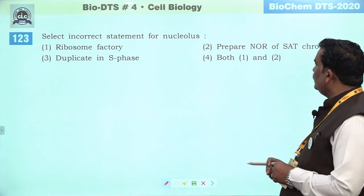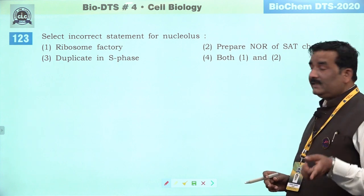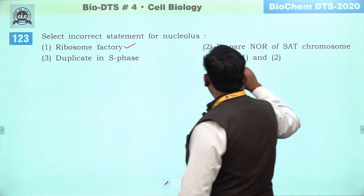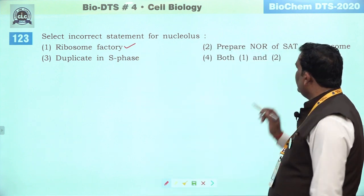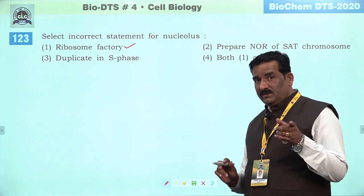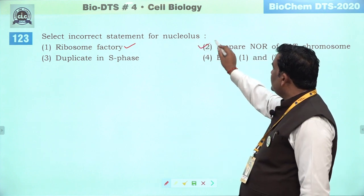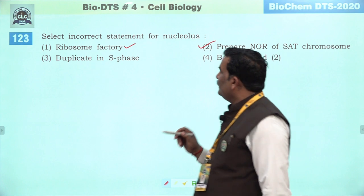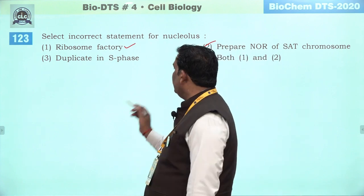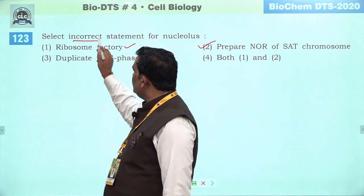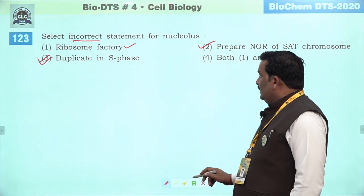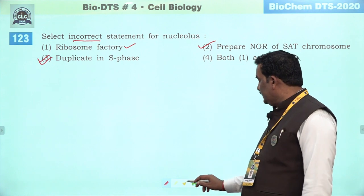Next question: select incorrect statement for the nucleus. Ribosome factory — bilkul bante hain, ribosome factory RER, prepare NOR inside chromosome — nucleus organized region, secondary constriction hi NOR bhi kahlata hai, iska connection nucleus se hai. Duplicate in S phase — S phase mein centrosome replicate hota hai, nucleus nahi. Isliye incorrect puchha hai. Third ek behtar vikalp hai — third ko hi answer maana gaya hai.